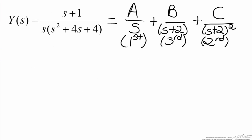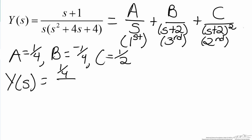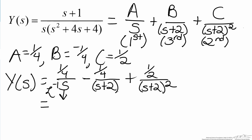Now that we have found all of the values of our numerators, we can now begin to move along the process of solving for y in the time domain by taking advantage of the inverse Laplace transform. So what that leaves us with is our system in the Laplace domain is 1 quarter over s minus 1 quarter over s plus 2 plus 1 half over s plus 2 squared.